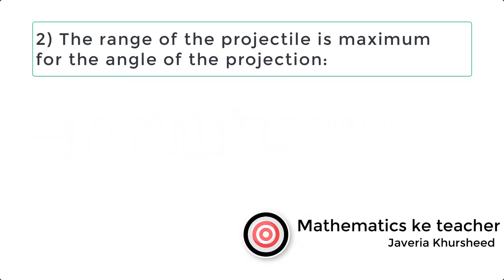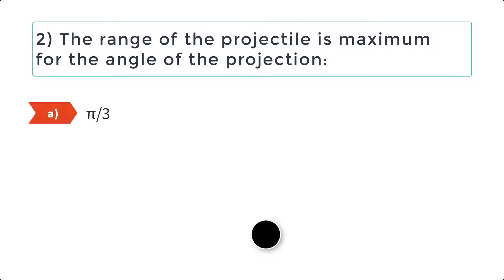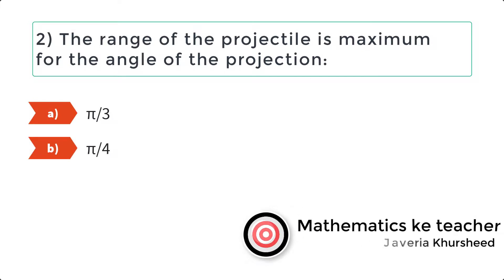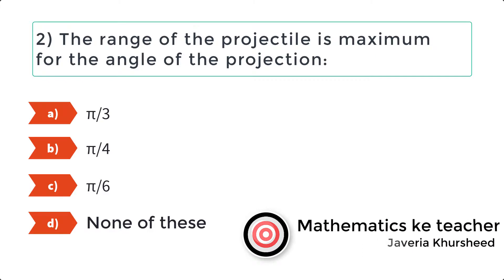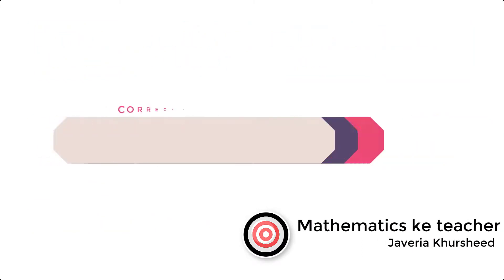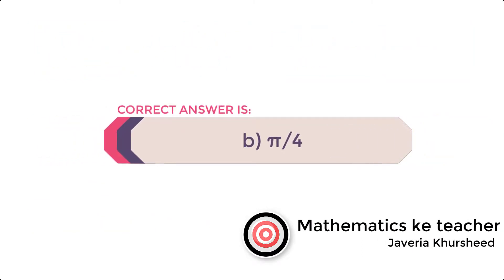Question 2: The range of the projectile is maximum for the angle of projection: A. π/3, B. π/4, C. π/6, D. None of these. Correct answer is B: π/4.